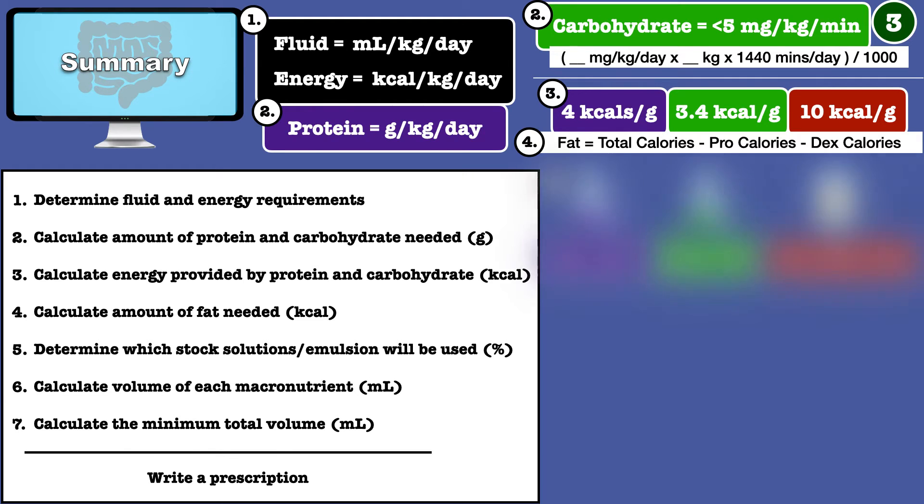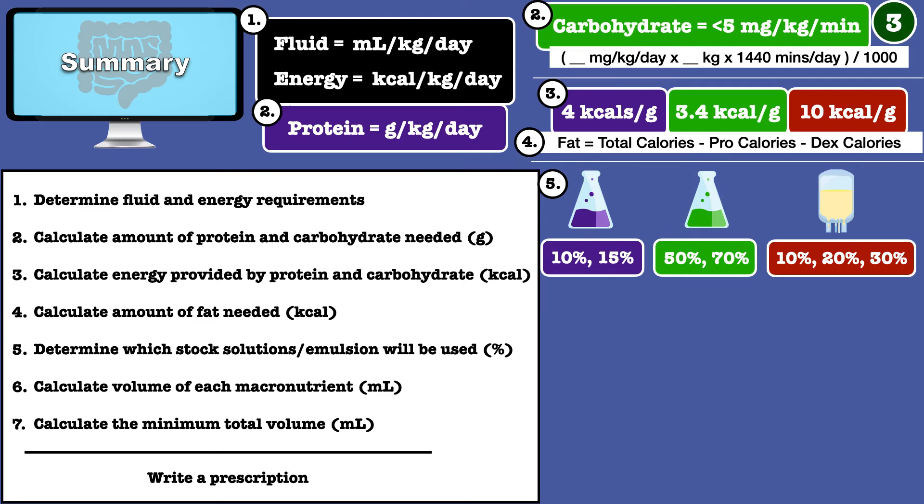This is where you select the stock solutions and fat emulsion from the various choices and calculate the volume of each macronutrient. To do this, it is best to set up a proportion.